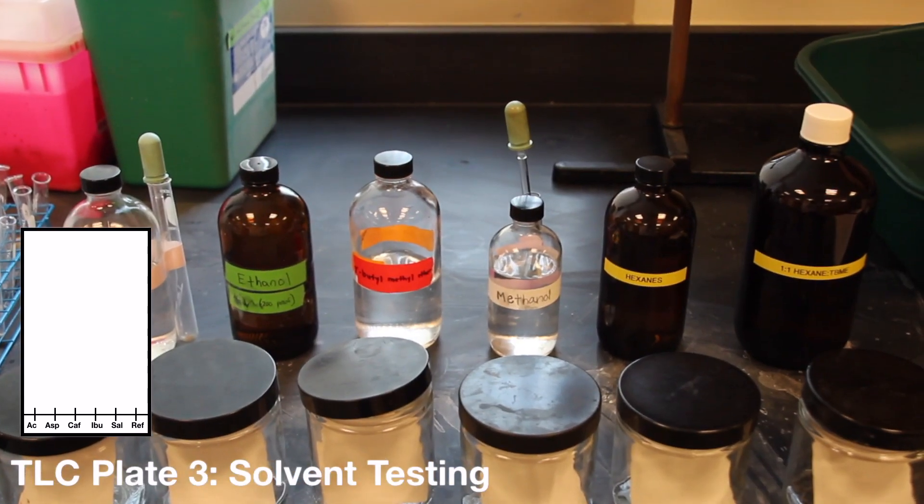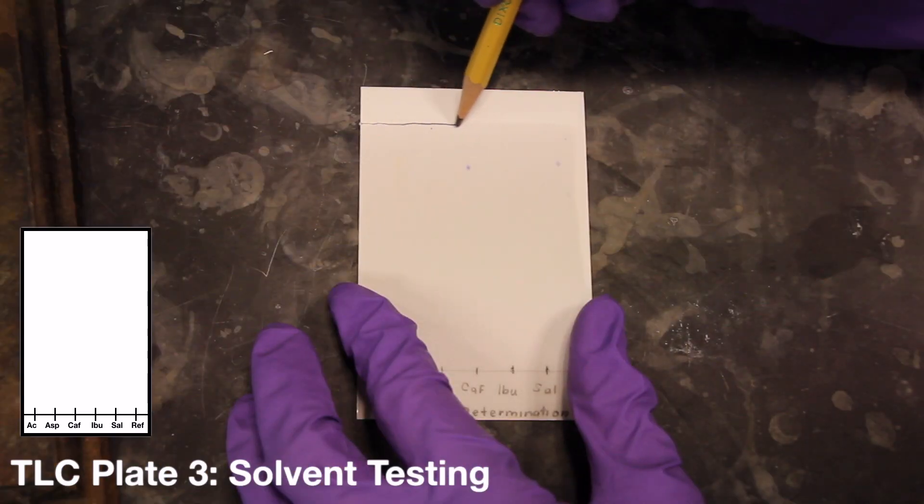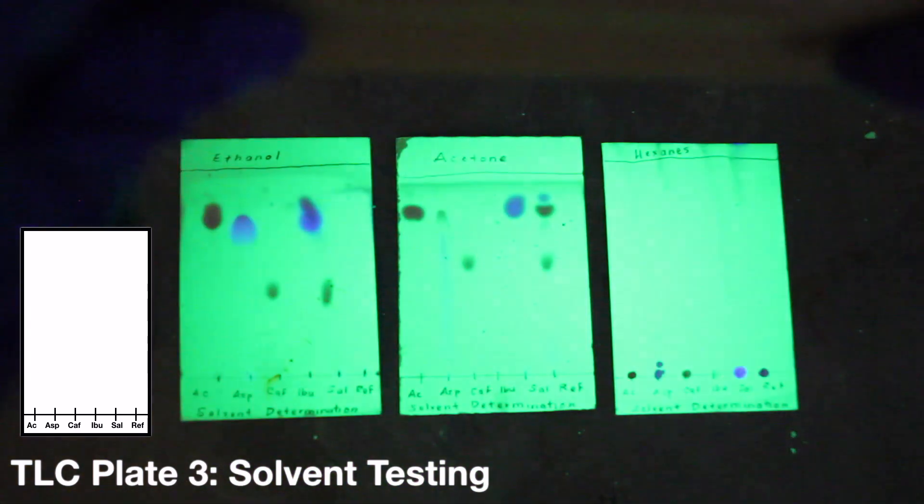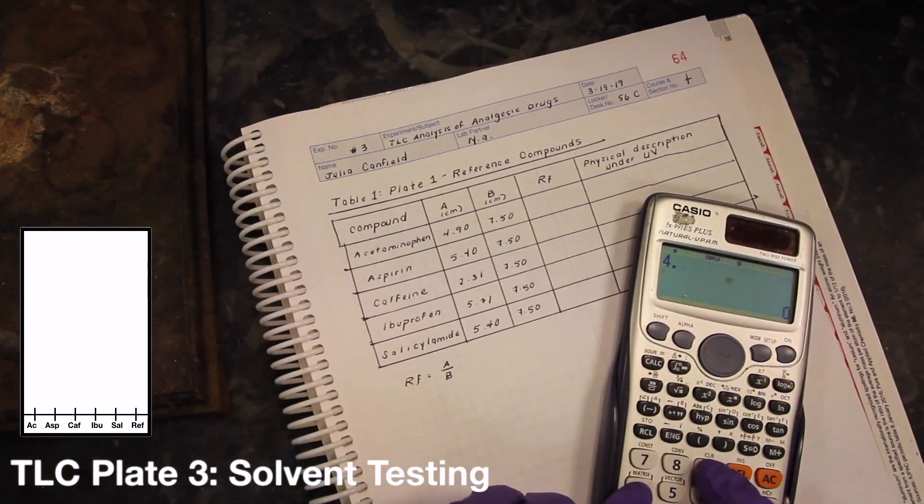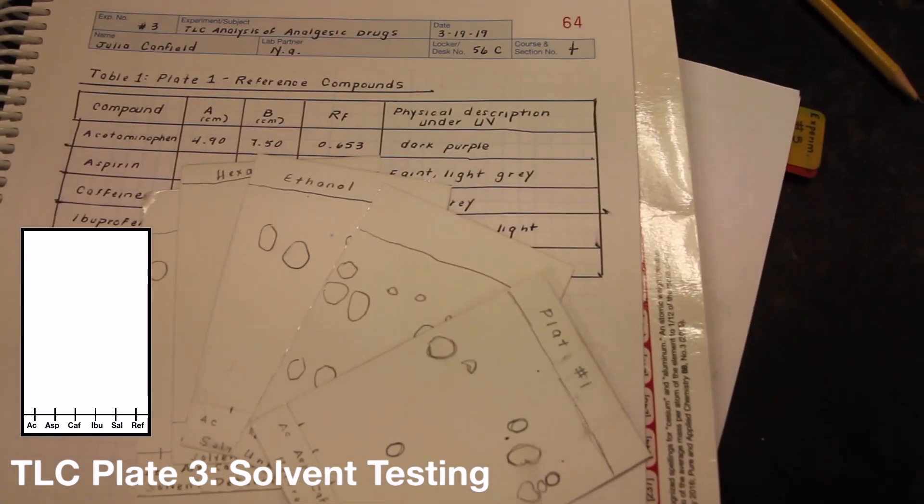After the TLC plate has developed, use the same procedure as before to visualize the spots and calculate the RF values of each. Alright, thank you.